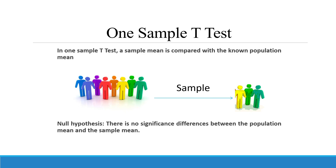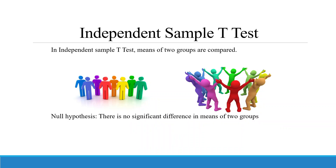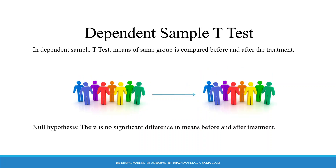In my previous video, we have already discussed how to run a one-sample t-test, which we run when we want to compare the sample mean with the population mean. We also discussed the independent sample t-test, where we compare the means of two different groups, and the dependent sample t-test, where we compare the means of groups before and after treatment.